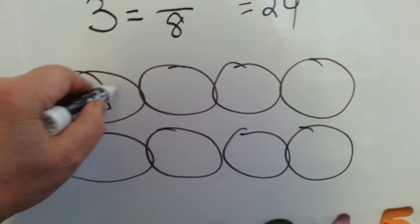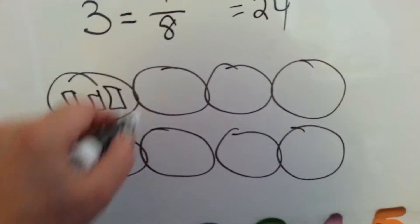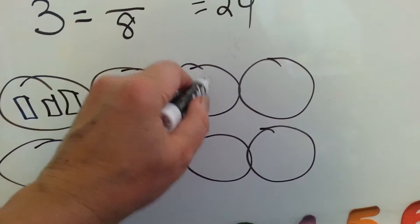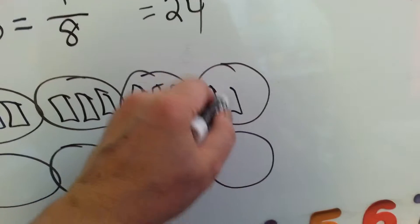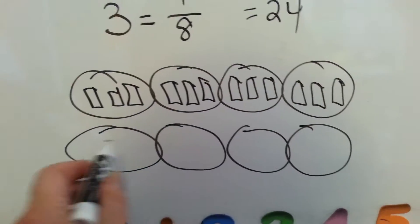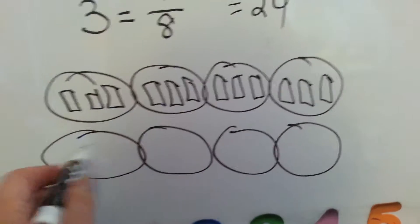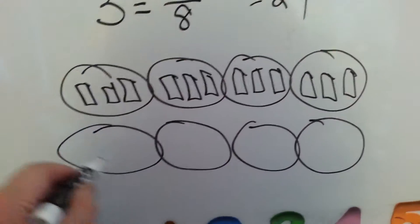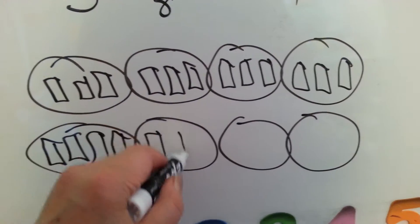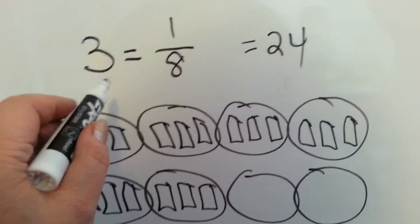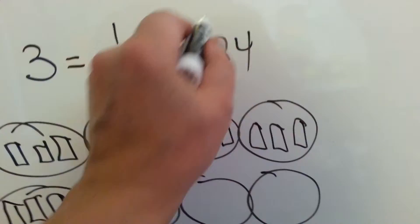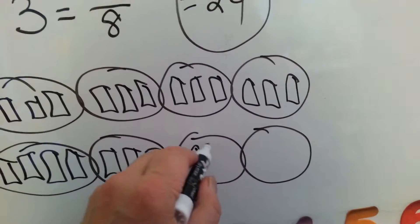One book, two books, three books. Four books, five books, six books. Nine, ten, eleven, twelve. And if that's twelve, then this is four groups also. That must be another twelve. And twelve and twelve is twenty-four. So we were right. There's twenty-four books on his bookshelf. If three of those books are one-eighth of all of his books, then he must have twenty-four books in all.